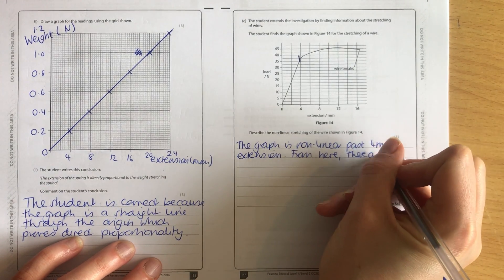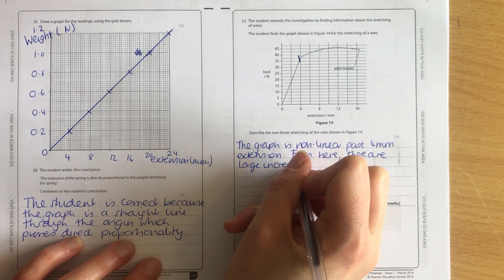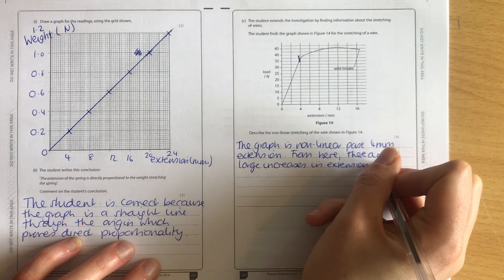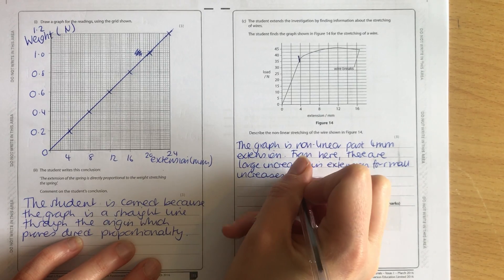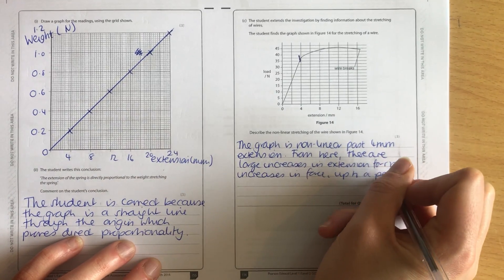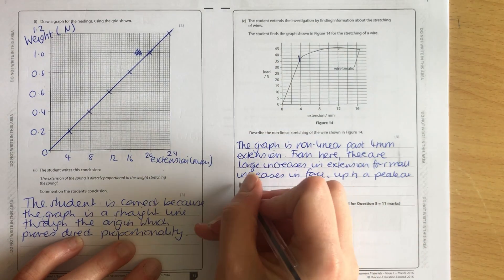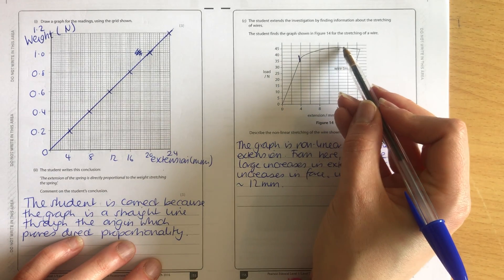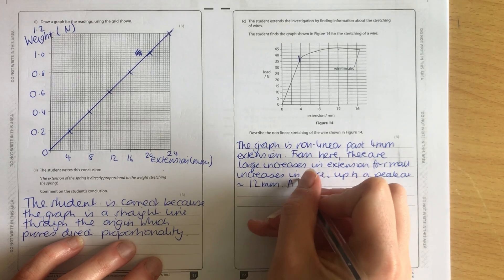The peak is about here, approximately 12 mm. Now after 12 mm, it's still extending, even though the force is reducing. So after this, the wire continues to extend, even when the force is reduced.